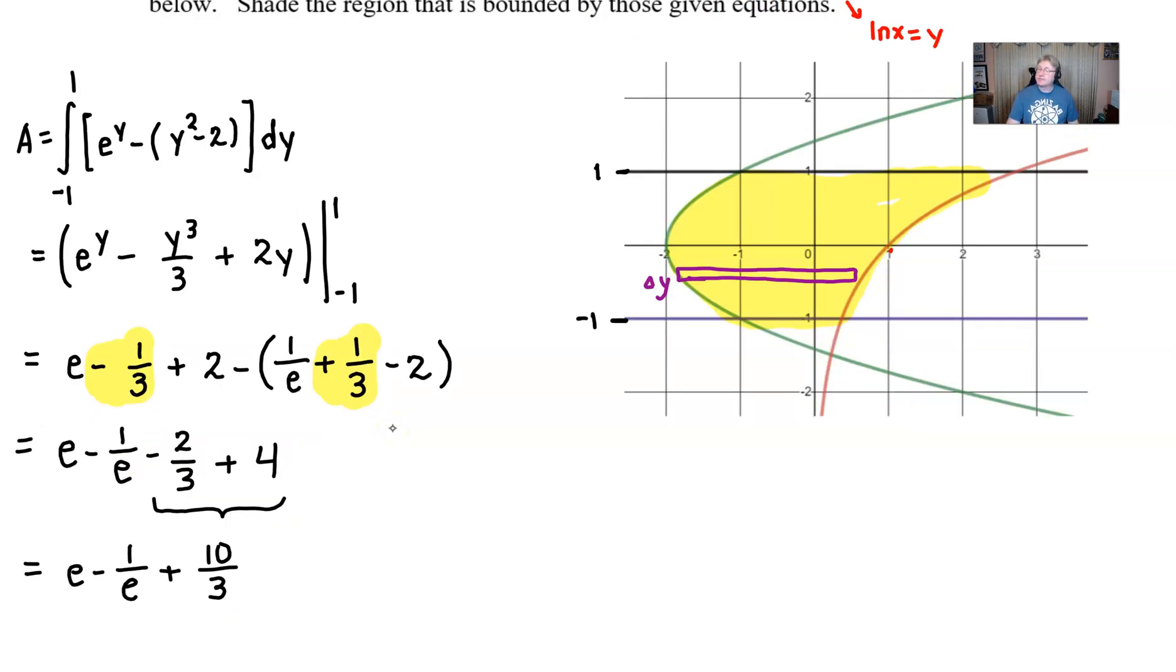If this was a multiple choice problem, this would certainly be a simplified answer that we would take. It's an answer you can't really, without a calculator, approximate to get some decimal value to count the spaces in this yellow region to see if it makes sense. You're going to have to trust your work and the fact that you arrived at the correct answer.